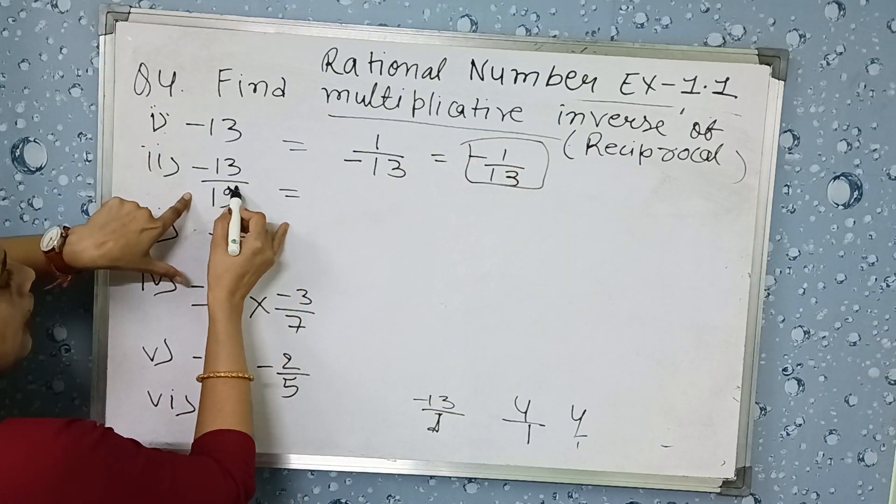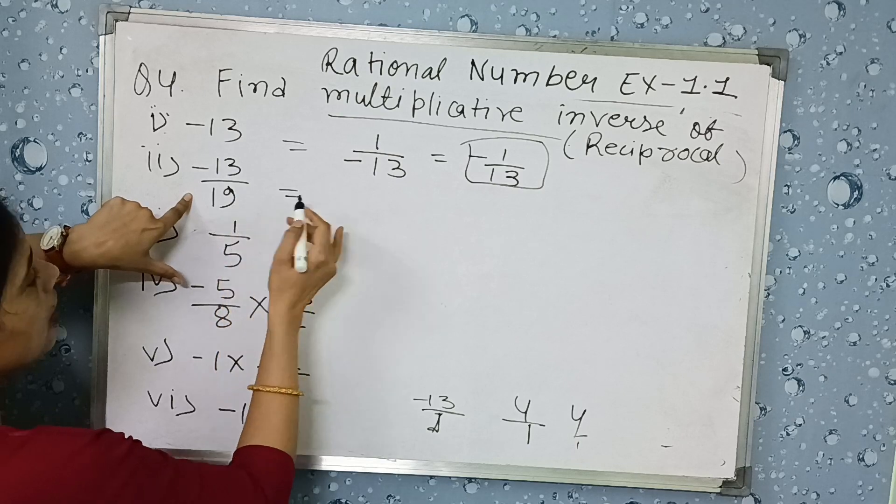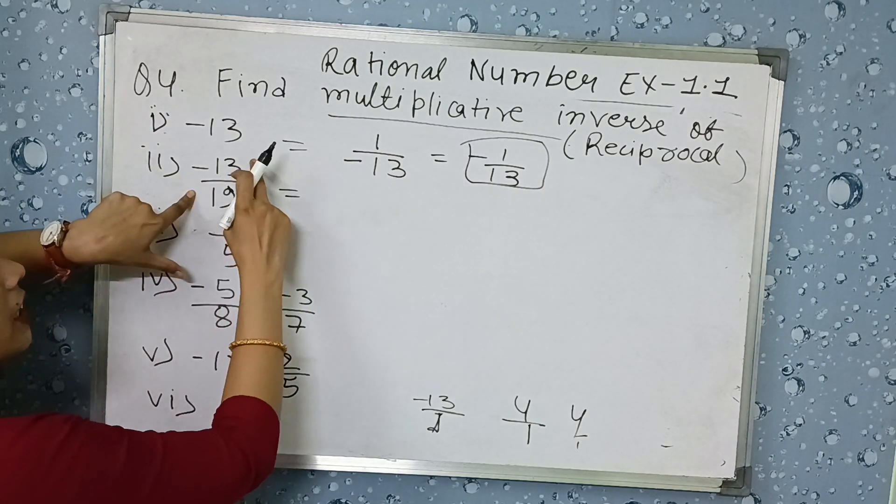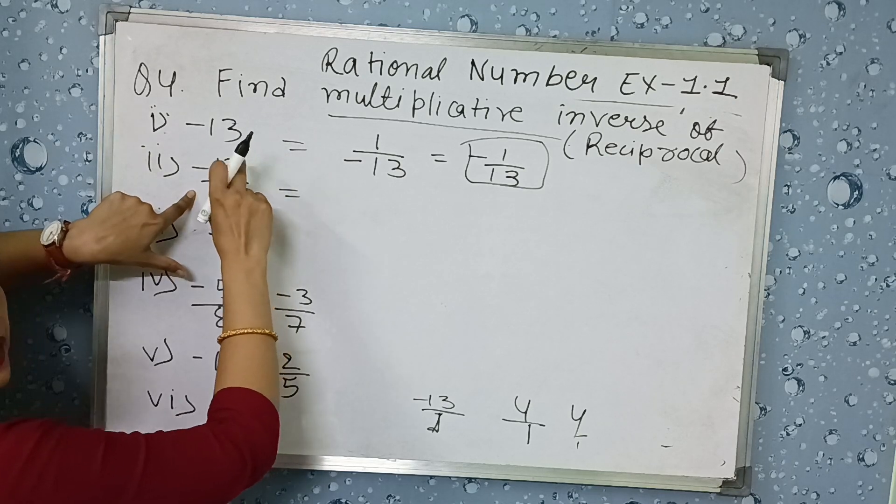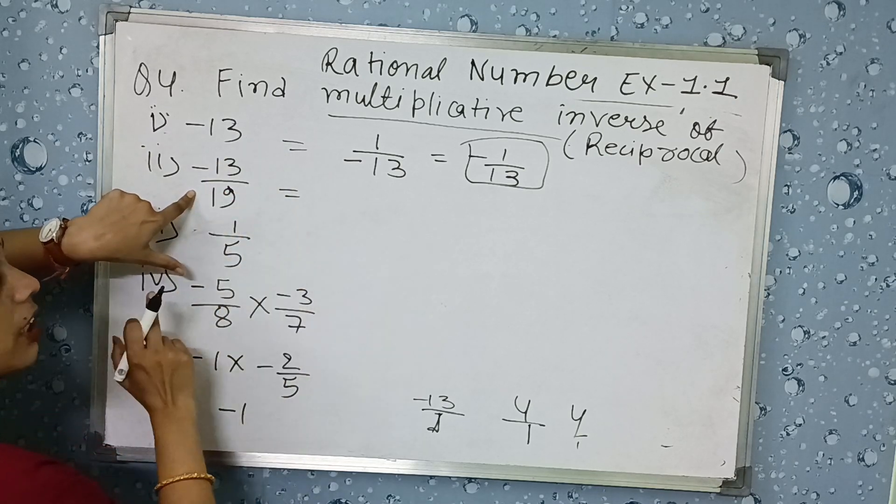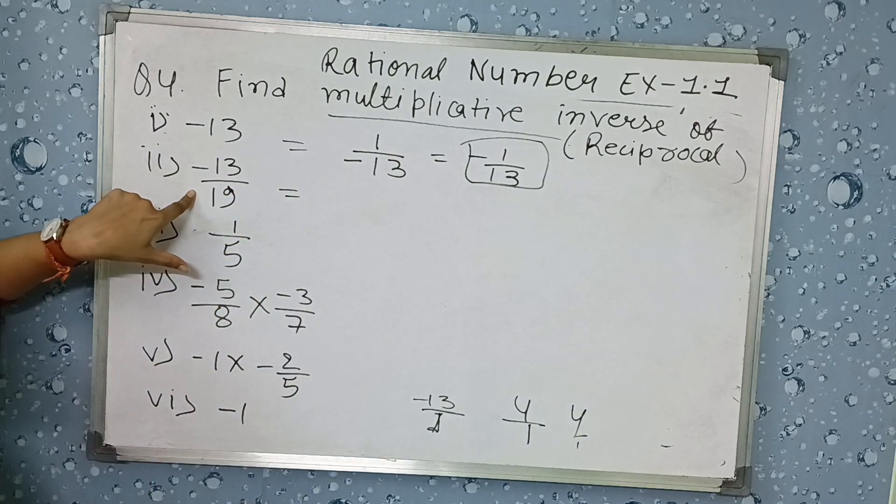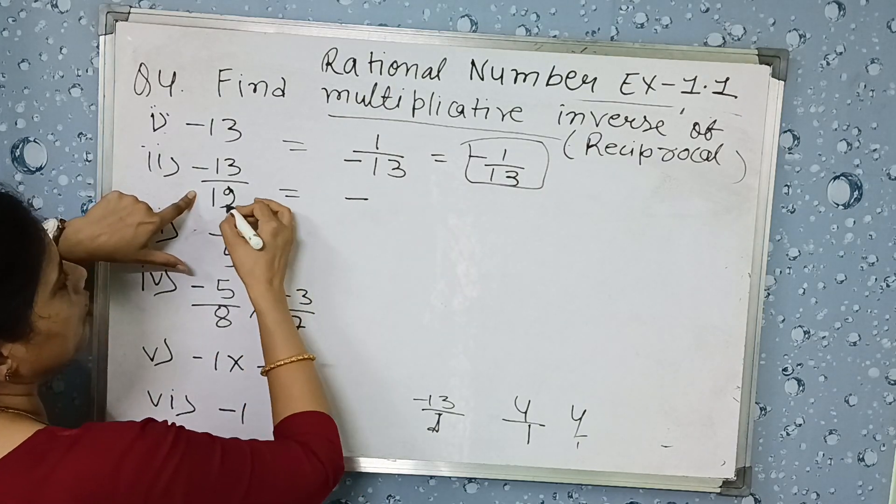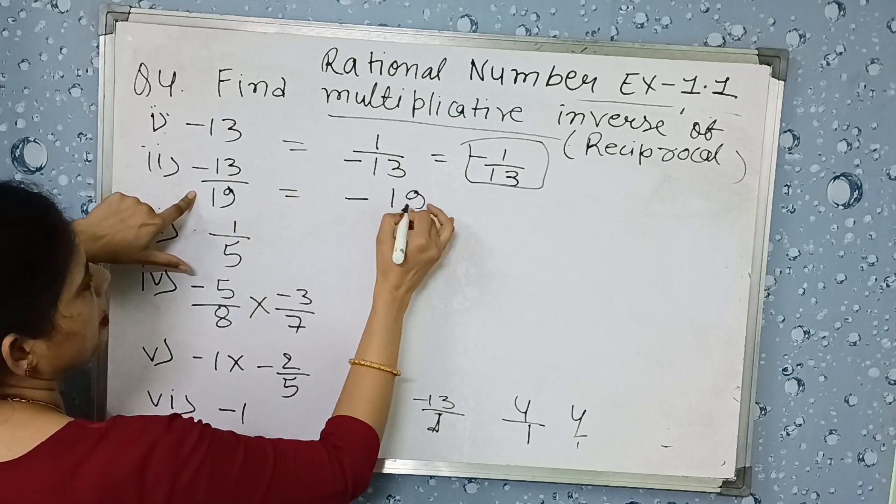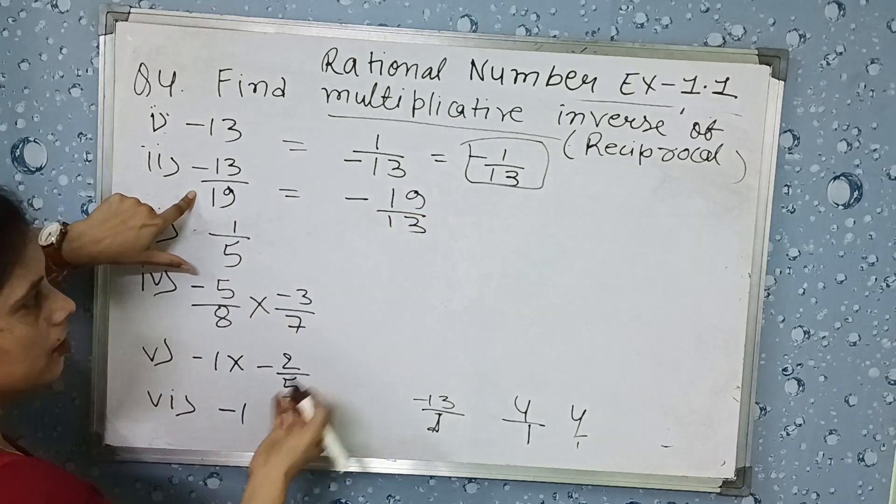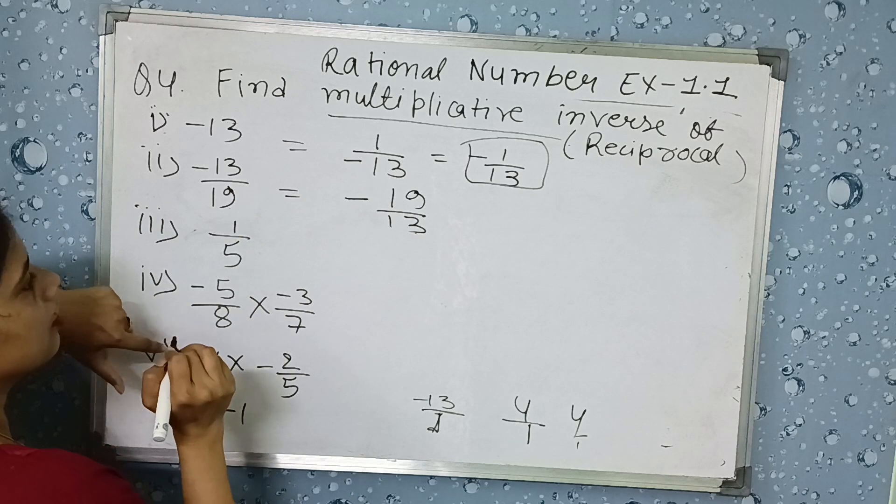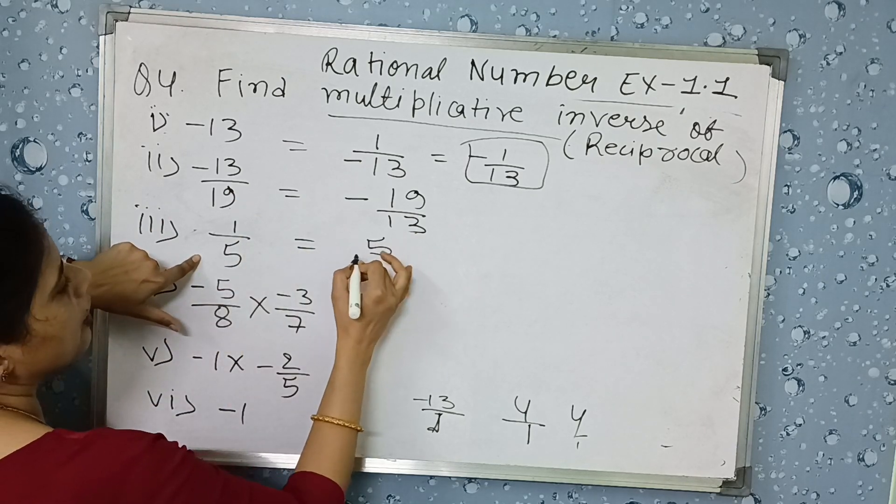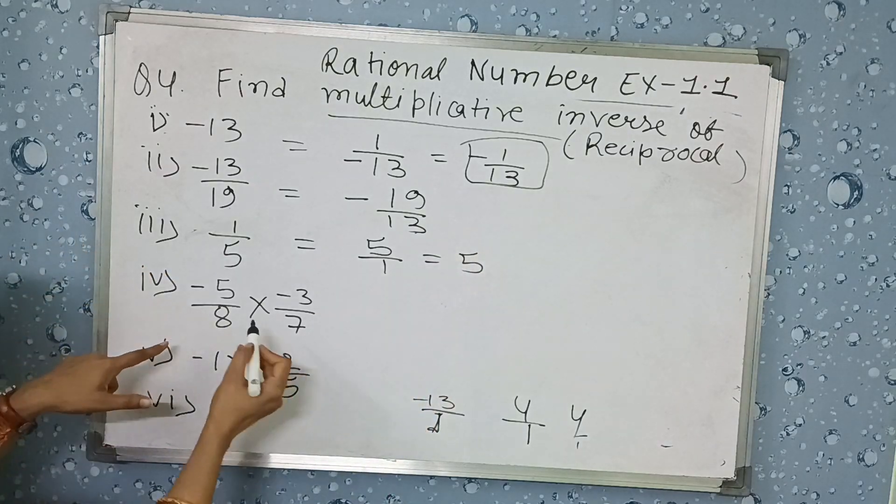Same, it is 13 by 9, so it will be 9 by 13. Same here, it is 1 by 5, so it will be 5 by 1 or 5.